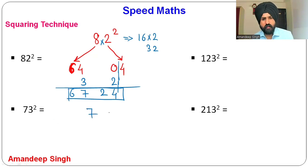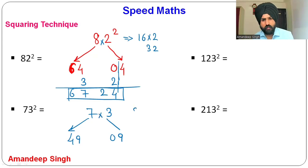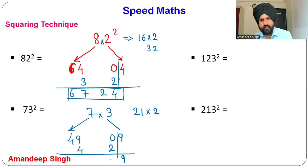For 73²: 7² = 49, 3² = 09. 7 × 3 = 21, double = 42 (ignore last digit, write 4). Add: 49 + 4 = 53, bring down 2 and 9. Answer: 5329.